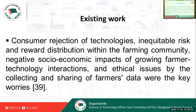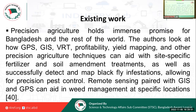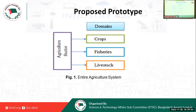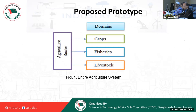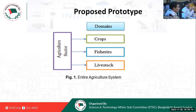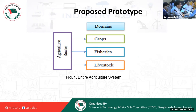The chair requested moving to the proposed work. This is the proposed prototype. The whole agriculture system will introduce smart agriculture from crops, fisheries, and livestock — the entire agriculture system could be implemented.